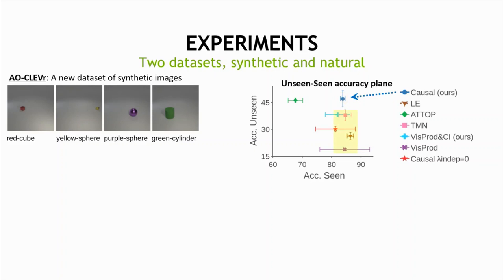Importantly, this comparison reveals that encouraging the conditional independence relations largely improves the unseen accuracy without hurting much the seen accuracy. Specifically, we observe large improvements when comparing a baseline without conditional independence to our full causal approach.